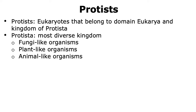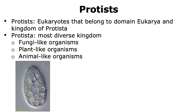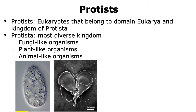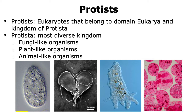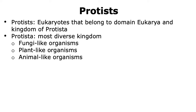These animal-like organisms can be ciliates that have cilia all over their cell surface to aid in locomotion, or flagellates which have flagella that aid in their locomotion. They can also be amoeboids that have pseudopodia that enable them to move, or sporozoans that lack cilia, flagella, or pseudopodia but show a gliding motion and can form spores. Animal-like protists are also called protozoa.